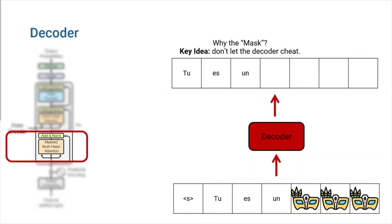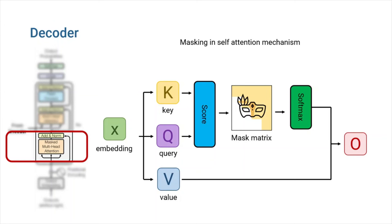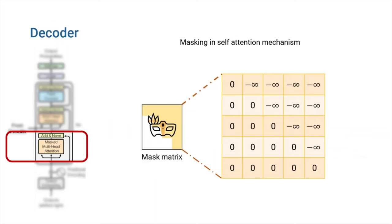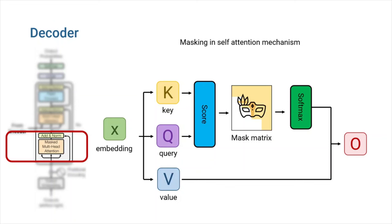In order to prevent our decoder from cheating, we use masking. For example, when the decoder is supposed to produce the fourth output token, we should mask every word from index 4 until the end of target sentence. The self-attention mechanism used in the decoder is just like the one we saw in encoder. The main difference is that in this self-attention mechanism, we apply a mask matrix on the scores. Mask is a matrix like this. It's an upper triangular matrix that all of the entries above its main diagonal are minus infinity. Adding this matrix to the score matrix will cause the softmax to assign zero probability for every forbidden word. Hence, the attention weight on these words will be zero.